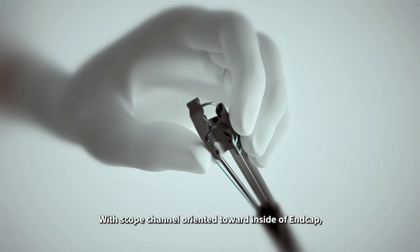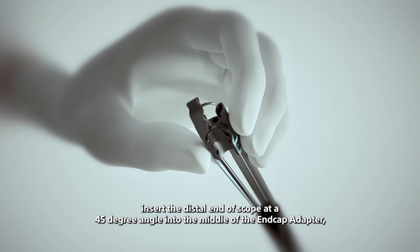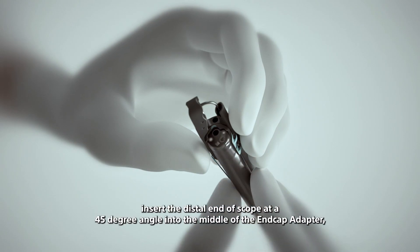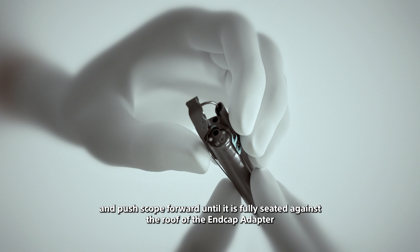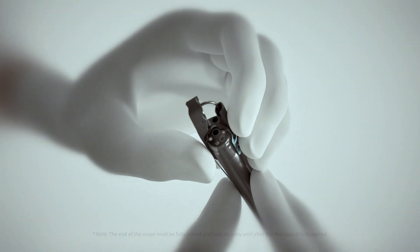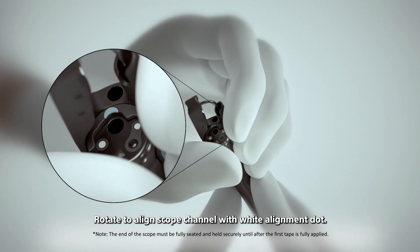With scope channel oriented toward inside of end cap, insert the distal end of scope at a 45 degree angle into the middle of the end cap adapter and push scope forward until it is fully seated against the roof of the end cap adapter. Rotate to align scope channel with wide alignment dot.